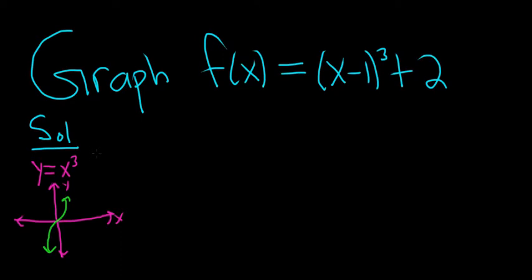Just as a recap, in case you've never seen this, if you had something like x cubed and then you had the plus 1 on the outside, you would go up by 1. If you had something like x cubed minus 1 and you had the minus 1 on the outside, you would go down by 1.